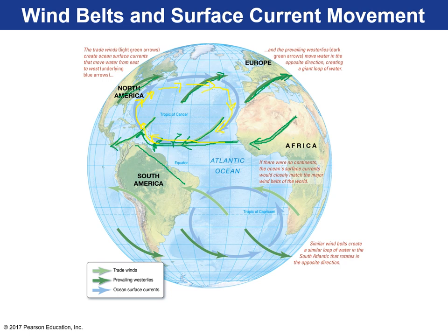We call that loop a subtropical gyre — large circular movements of ocean water at these latitudes. In the South Atlantic, the same thing occurs. The southeastern trade winds blow waters near the equator to the west. The Coriolis effect deflects these water masses to the left in the southern hemisphere, so they go southward. Then the southern hemisphere westerlies push that water east, it deflects left again, goes north, and completes the South Atlantic gyre.